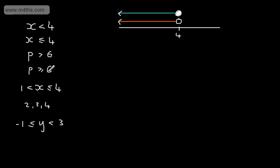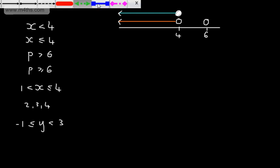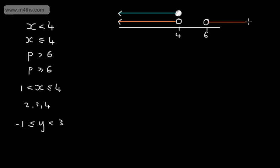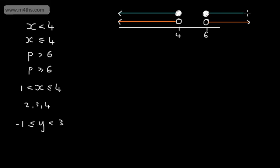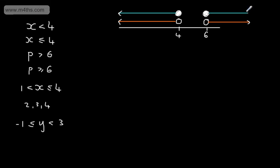If we look at p is greater than 6, we'd locate 6 on a new number line, have an open dot, and then we're interested in all values greater than 6 — strictly greater than 6, so we couldn't include 6. If we had p greater than or equal to 6, we could include 6, so we'd have a closed dot. We're interested in values 6, 7, 8, 9, right the way up as far as you can count.